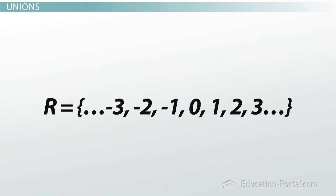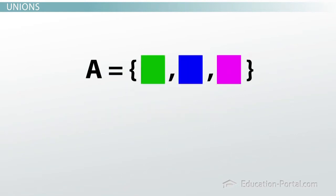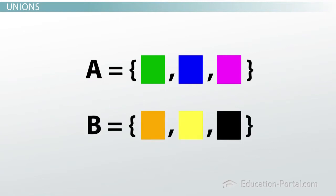To collect sets together, we use the term union. We unite the sets into one. Let's say I have two sets. Set A is green, blue, and pink. Set B is orange, yellow, and black.